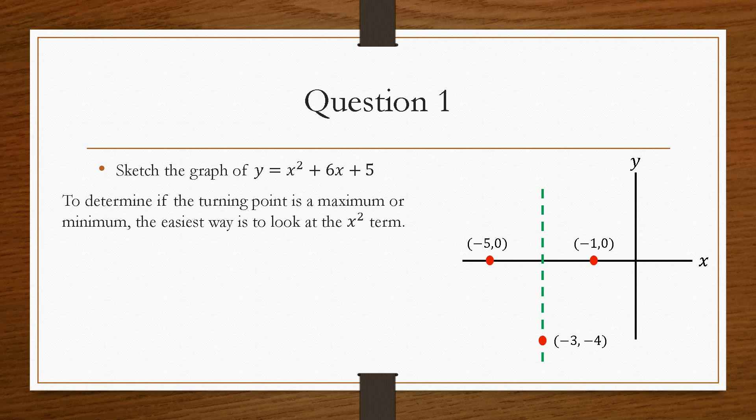Now, the next thing, when we deal with the turning point, normally we would tend to continue on and deal with the nature. Now, the nature is very easy to spot if you only consider the x-squared term. So the x-squared term, if it is a positive value, then it is a minimum turning point, and if the x-squared value is negative, then we have a maximum turning point.